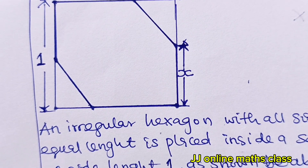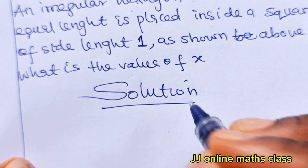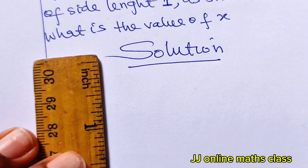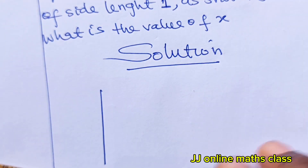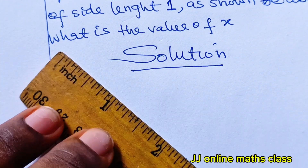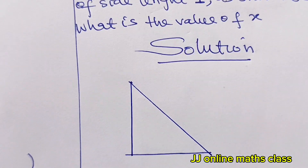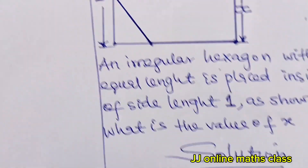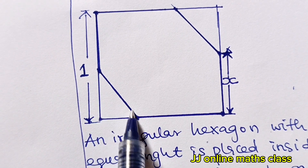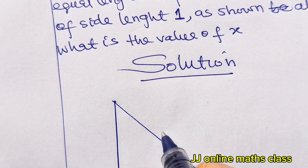Let's dive into the solution. We'll cut off a corner part of the diagram and use it to solve the question. If we draw that part out, we get something like this — a small triangle in the corner. Remember that the whole side is one, but from here to here is x, so we label this side x.